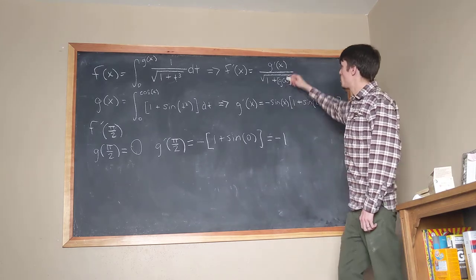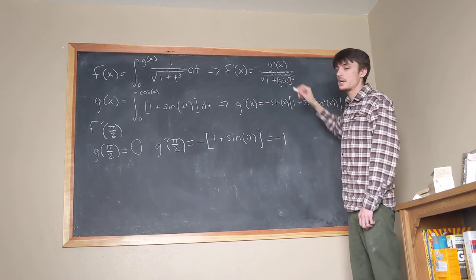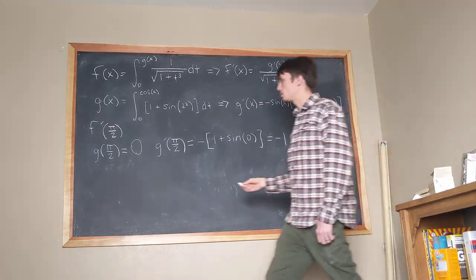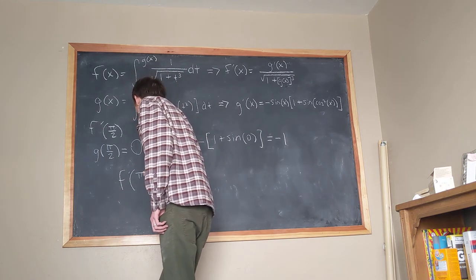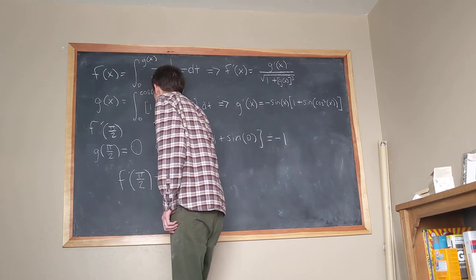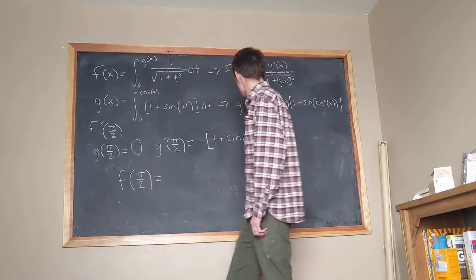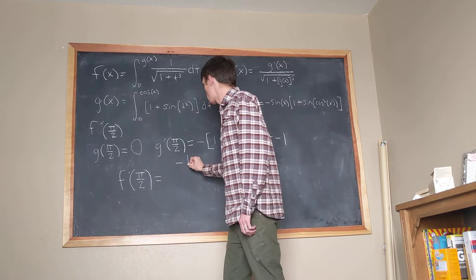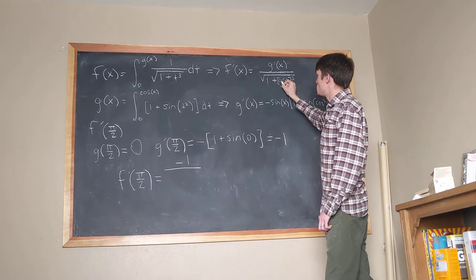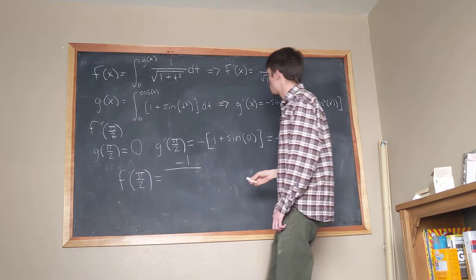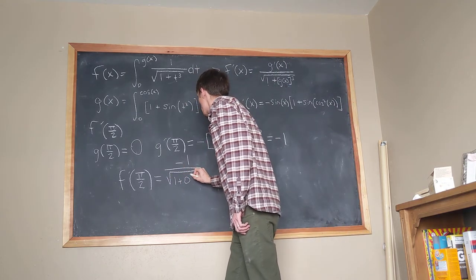Okay, so now we know g prime of pi over 2, and we know g of pi over 2, we can go ahead and plug them into this formula here to get f prime of pi over 2. So, just coming down here to finish this off, f prime of pi over 2 is equal to g prime of pi over 2, which is negative 1, divided by the square root of 1 plus g of pi over 2, which is going to be the square root of 1 plus 0 cubed.